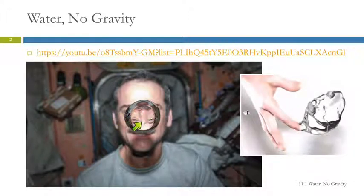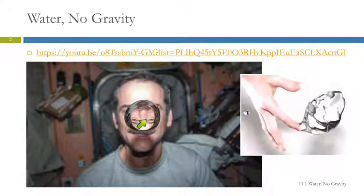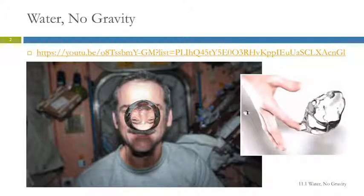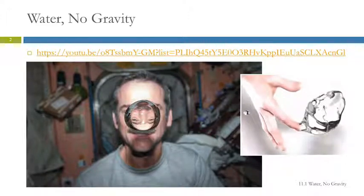Here's an astronaut, and there's this big drop of water. It's cool how they took the picture — you can see his face upside down in there, because spherical things do that. They invert the image. So what is going on here? How can you have this giant drop of water?